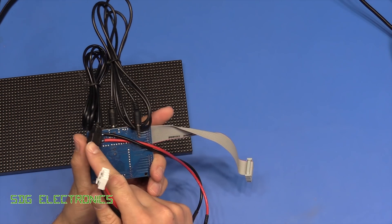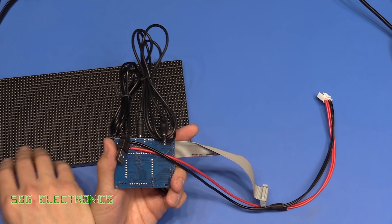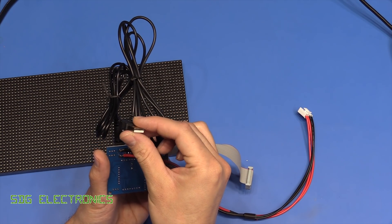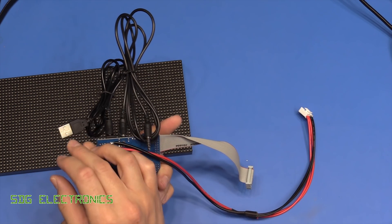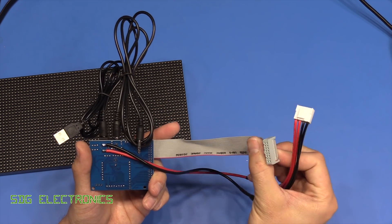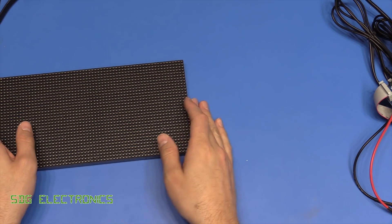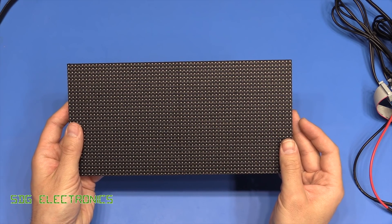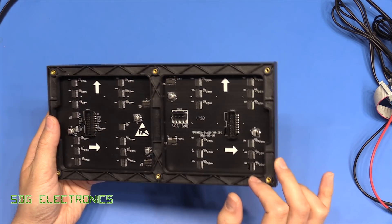It takes a 5 volt input. It does draw quite a lot of current if you do have all of the pixels on, so it comes with a USB connector but if you're going to plug it into something it probably ought to be a phone charger that can handle the two amps or so. And then it's got this cable that goes off to the display and the data cable that comes with it as well.